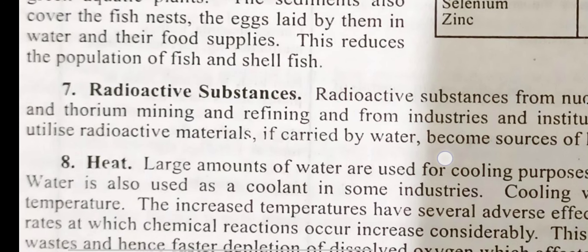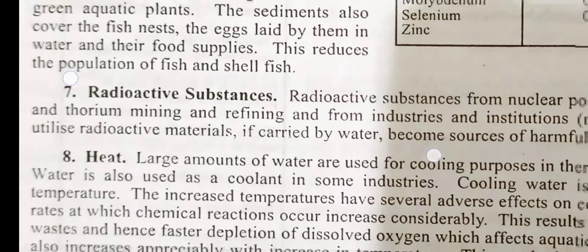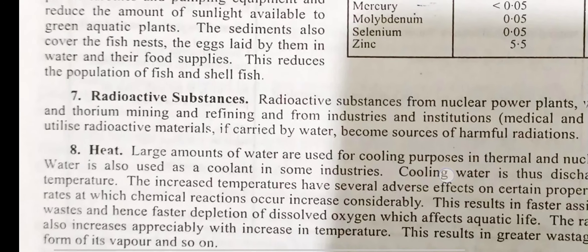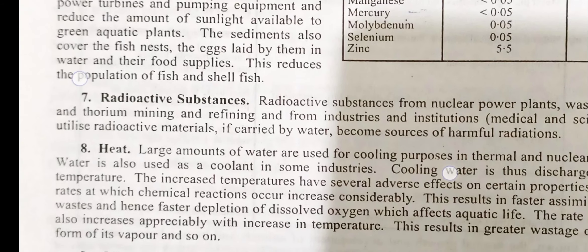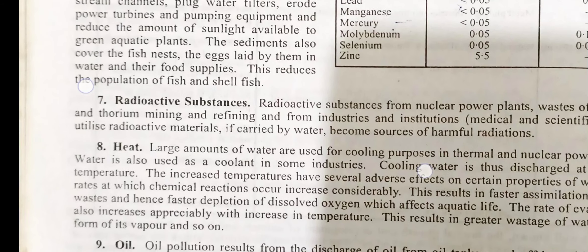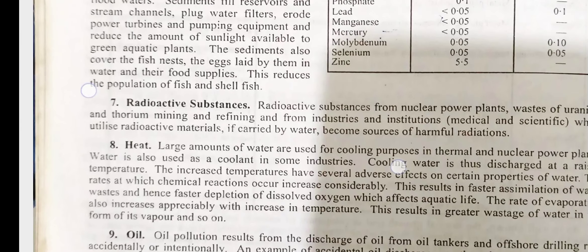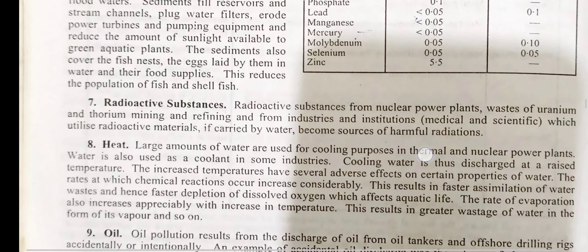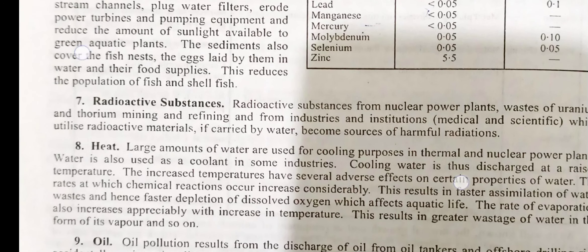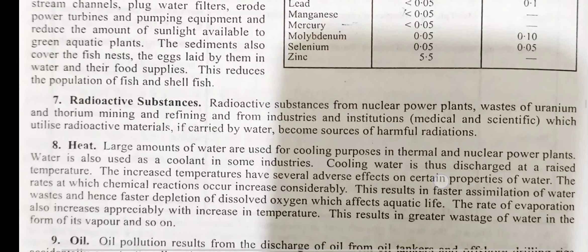Category 7: Radioactive substances. Radioactive substances from nuclear power plants, wastes of uranium and thorium mining and refining, and from industries and institutions which utilize radioactive minerals, if carried by water, become sources of harmful radiations.